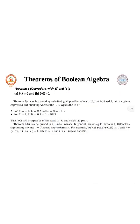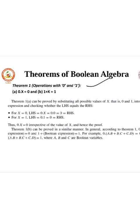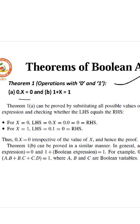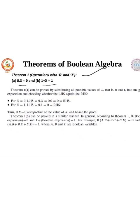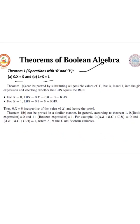Coming into the first theorem. First theorem is about operations with 0 and 1. First theorem states: 0 into x is equal to 0. The second one is 1 plus x is equal to 1. Let us take the first one. We can prove by substituting. We shall take LHS. We will take theorem A and substitute x equal to 0. Then 0 into 0, as per the postulates, is 0.